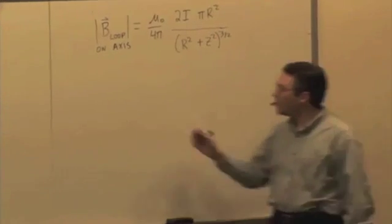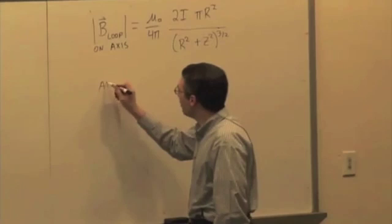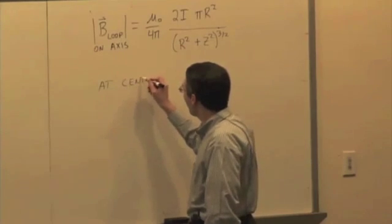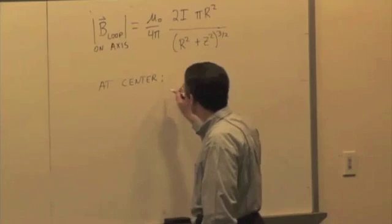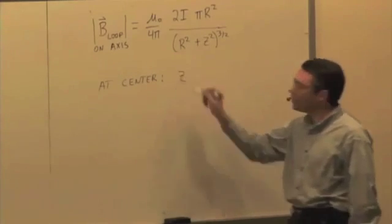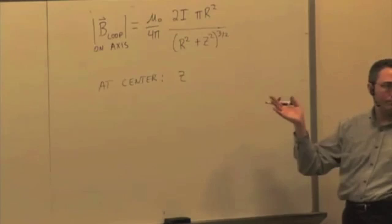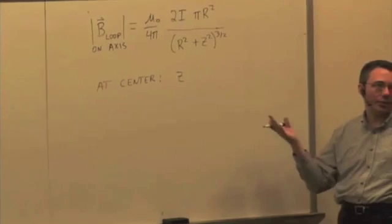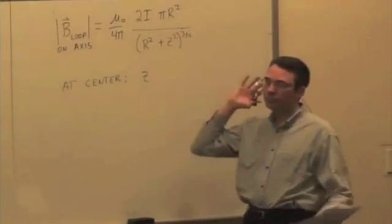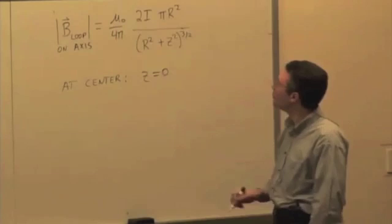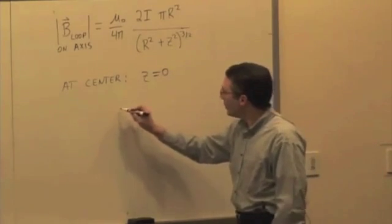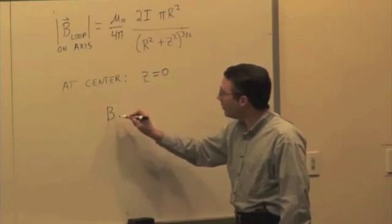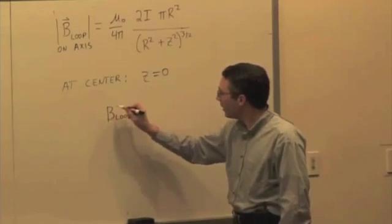Again, you can look at special cases. When we're at the center, z is equal to what at the center? We're at the very center of the loop. That means the z is equal to 0. Thank you. 0. Plug in this. Plug z is equal to 0 in here. And you find that the magnetic field is, in fact, not 0. Okay? Just like we expected it to be.